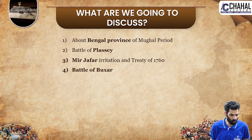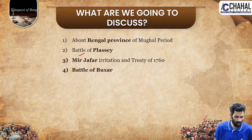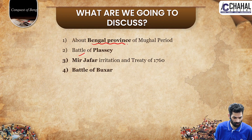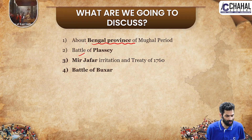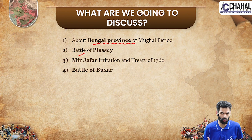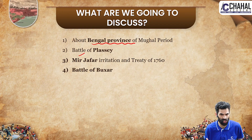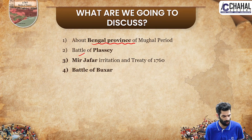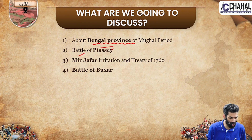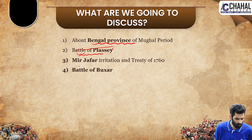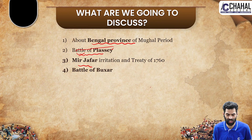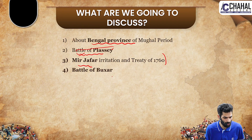Today we are going to discuss the Bengal province during the Mughal period. We will see how Bengal was situated within the Mughal Empire and the role of the British East India Company. Then we will talk about the Battle of Plassey, followed by Mir Jafar, the Treaty of 1760, and finally the Battle of Buxar.